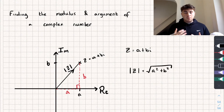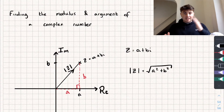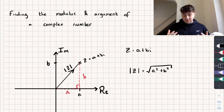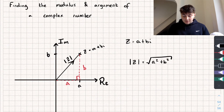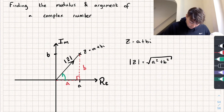The argument of the complex number is the size of the angle from the positive real axis. If our complex number is above the positive real axis, we measure it anticlockwise going round. If it's below the real axis, we measure it clockwise and it's going to be a negative value. For this complex number z, we measure it anticlockwise round from the positive real axis.